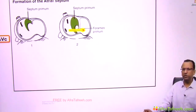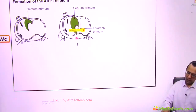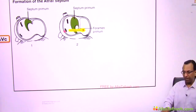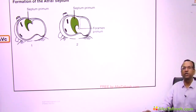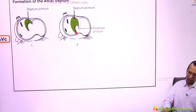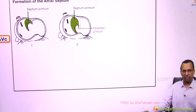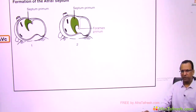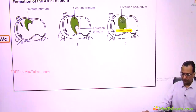There is a foramen — I will use that. Which foramen? The blood of the right atrium must go to the left atrium, and I will use the foramen here. It is called the first foramen, or ostium primum, or foramen primum. This is the first foramen — the ostium primum or foramen primum.